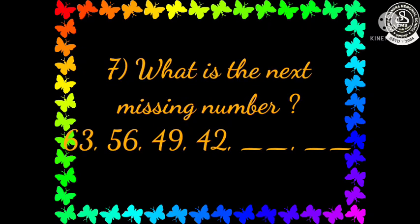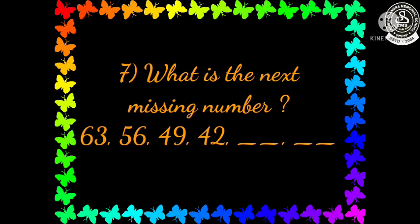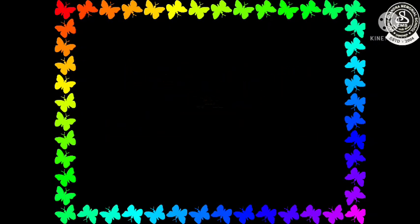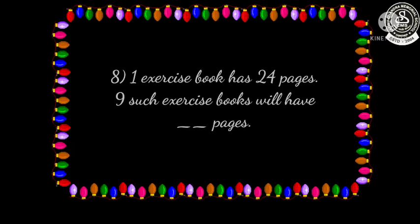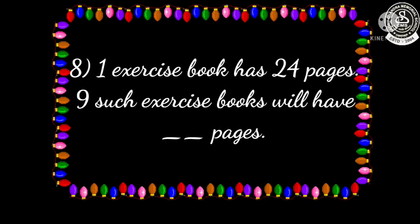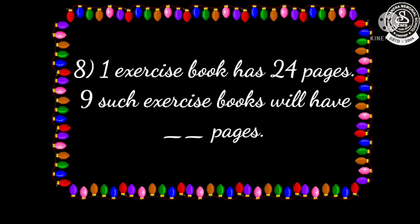Now let us see question number seven: what is the next missing number? You have to find out. So children, see the series very carefully. Next, question number eight: one exercise book has 24 pages, so nine such exercise books will have dash pages.